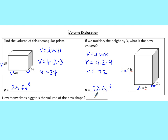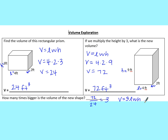It asks how many times bigger is the volume of the new shape. We take the new shape's volume of 72 and divide it by the original volume of 24, and we get 3. That means the new shape is 3 times as big. So the volume increased by a scale factor of 3 — we multiplied the height by 3, and that made our volume 3 times as large.